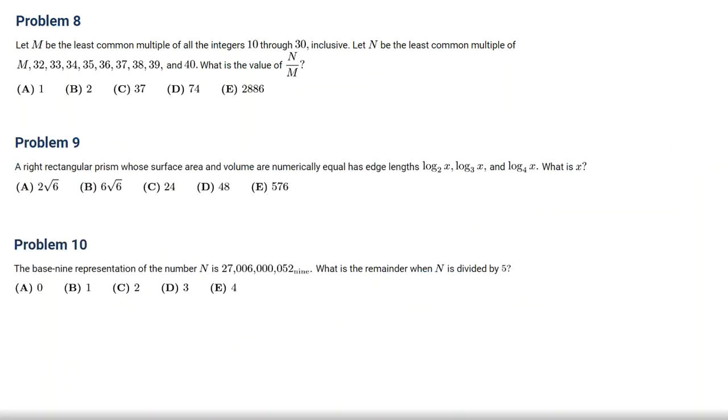Let's work on the next problem. Problem number 9. In problem number 9, it says that a right rectangular prism, the surface area and volume are numerically equal as edge lengths log base 2 of x, log base 3 of x, and log base 4 of x. What is x? So, let's work on this in a new page.